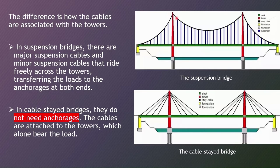The main difference is how the cables are associated with the towers. In suspension bridges, there is a main suspension cable and minor suspension cables that ride freely across the towers, transferring the loads to the anchorage at both ends. But in the case of cable-stayed bridges, there is no need for anchorage because the cables are attached directly to the towers.